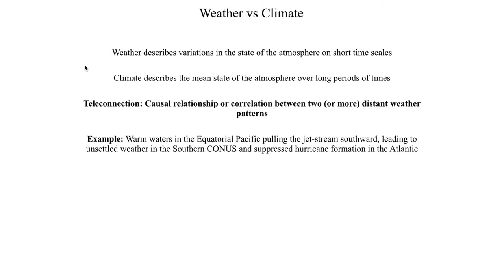An example of a teleconnection — which we'll discuss in greater detail in the next segment when we talk about El Niño — would be anomalously warm temperatures in the Pacific causing a shift in the jet stream. That shift could bring wet weather to the southern continental United States, or, if the jet stream shifts over the Atlantic Basin, you could have suppressed hurricane activity with fewer tropical cyclones forming. That's what we mean by teleconnection: a weather pattern deviation in one location causing an influence on a weather pattern really far away.